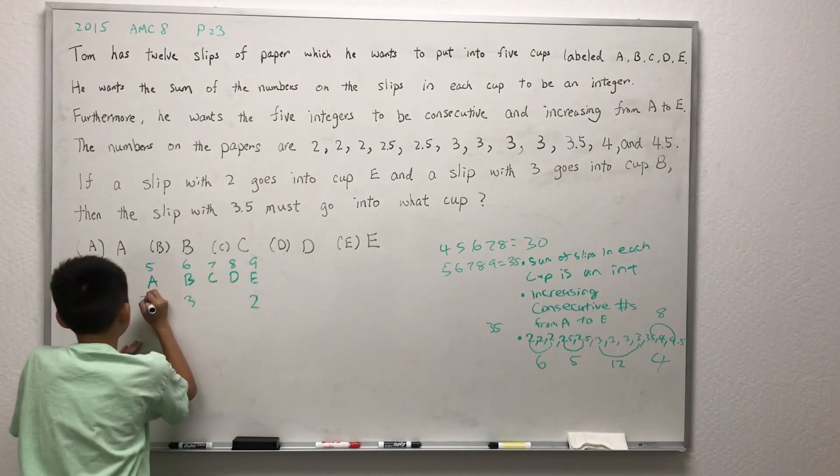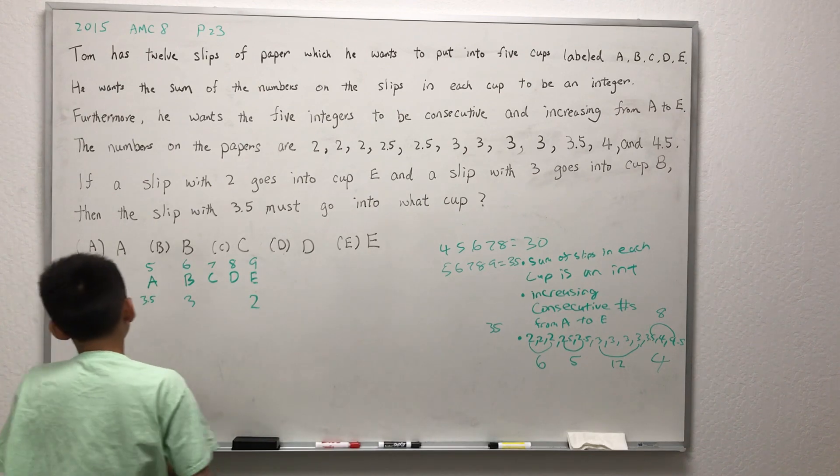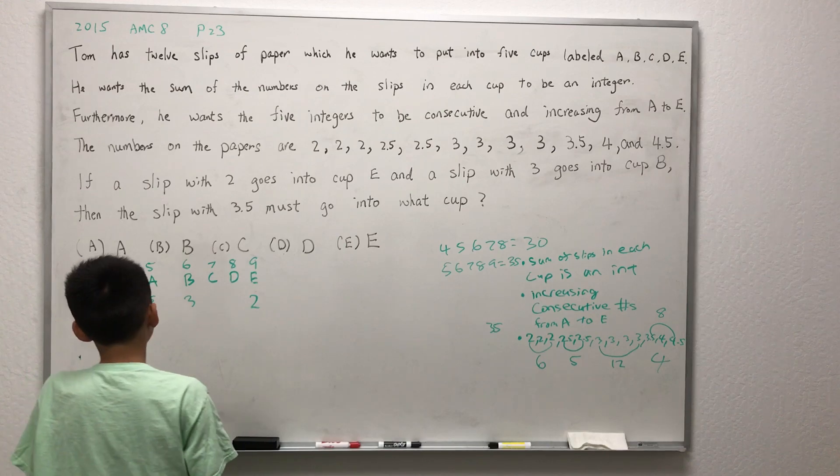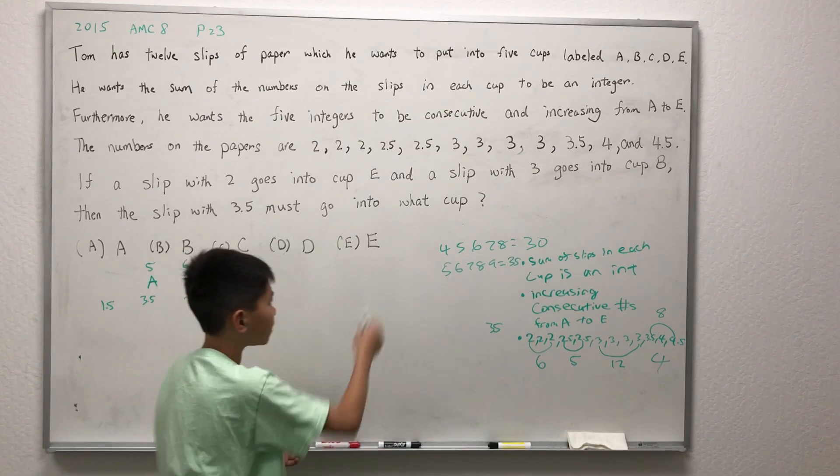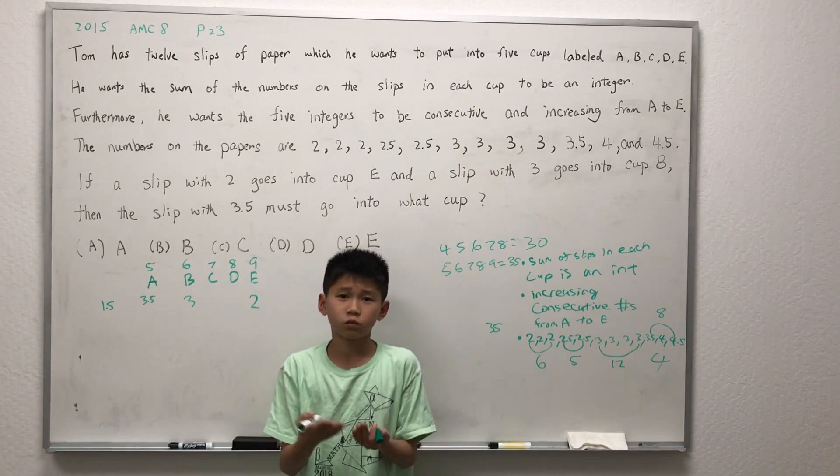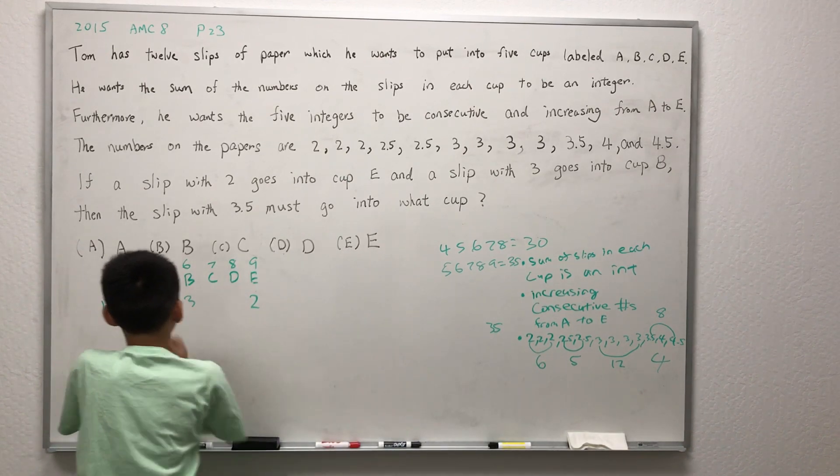If you plug the number 3.5 into cup A, there will be 1.5 left, because 5 minus 3.5 is 1.5. Since the smallest slip is 2, that means there is no slip that's 1.5. Therefore, option A is out.